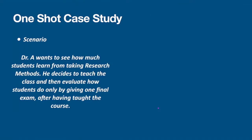Let's get into a quick scenario to help us understand what's taking place. The first type of study we'll look at is what we call the one-shot case study. In this one-shot case study, we have two things identified by letters: T and O. The T represents the treatment, which also represents what we call the independent variable.